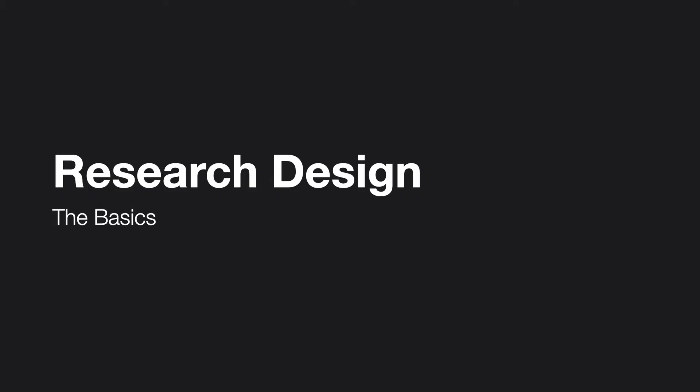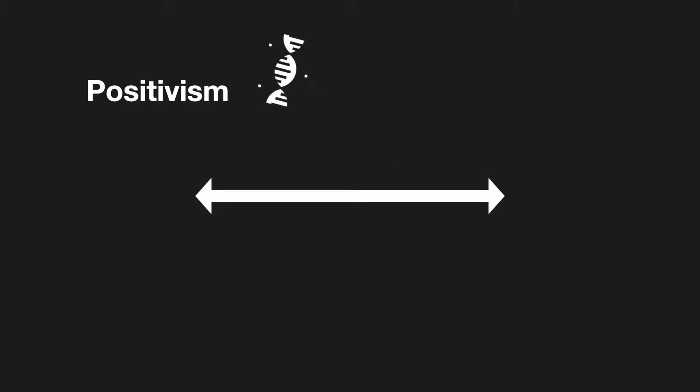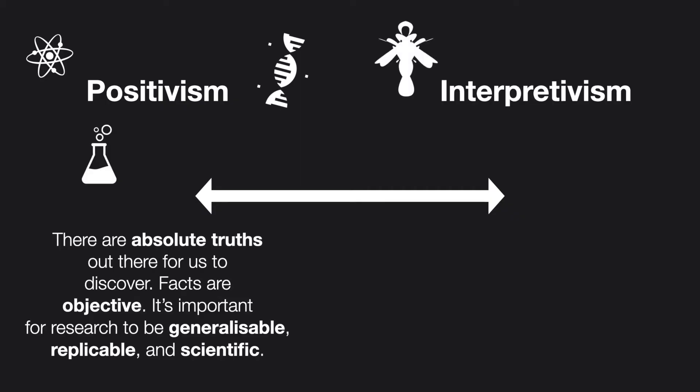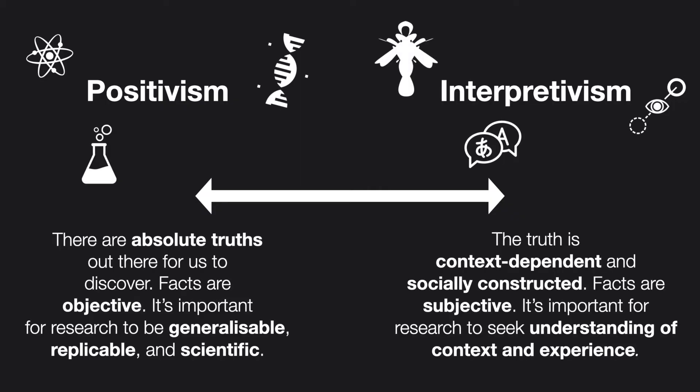Research methodology in part answers the question, why have you chosen this approach? But it also goes a bit further than that. Methodology is about explaining some of the assumptions that you bring to your research design. All researchers and research questions have built-in assumptions about how we can know things and learn about things, and about how data can be collected. It tells us about what kind of information will actually help us answer questions.